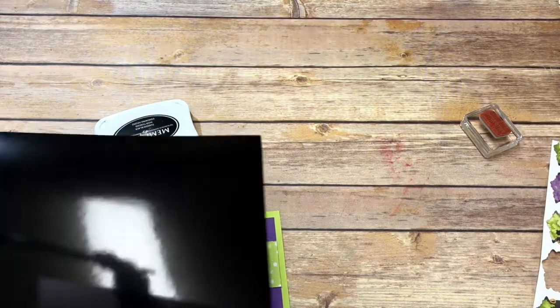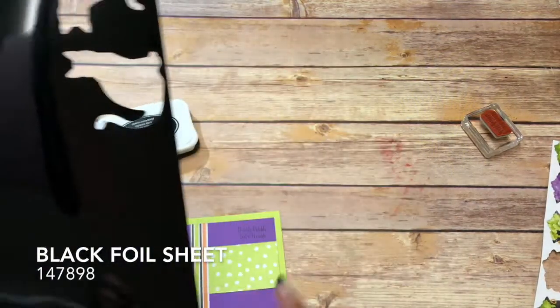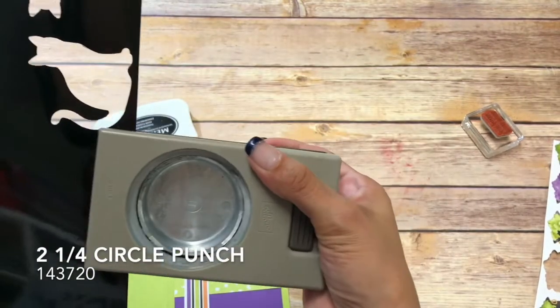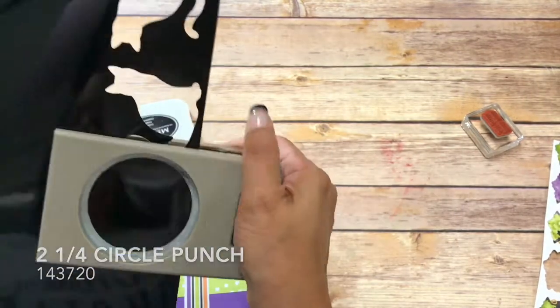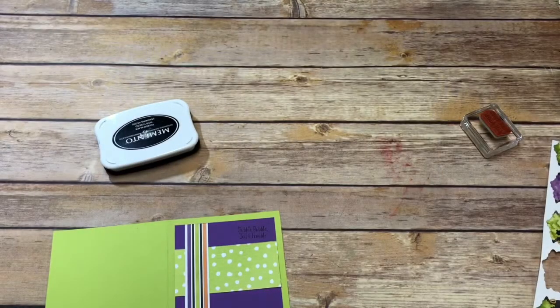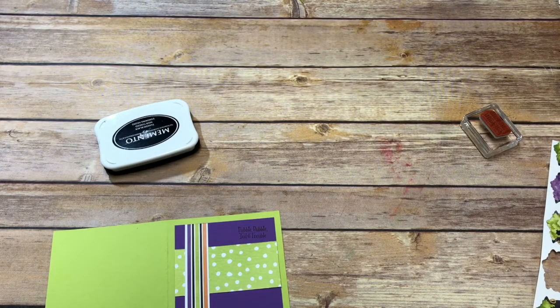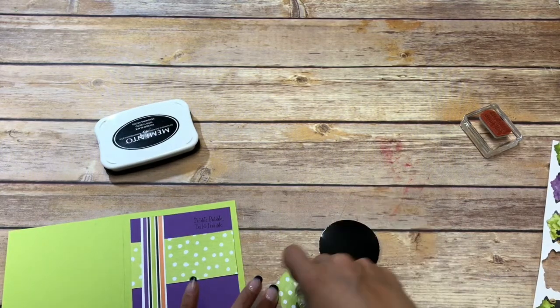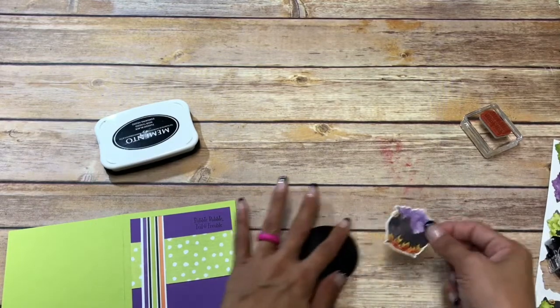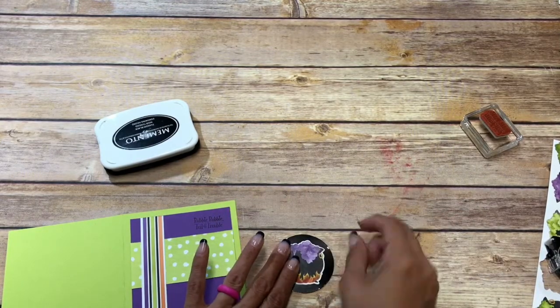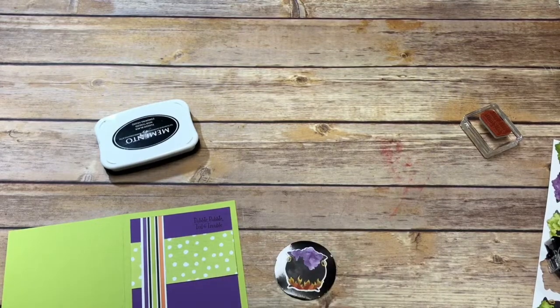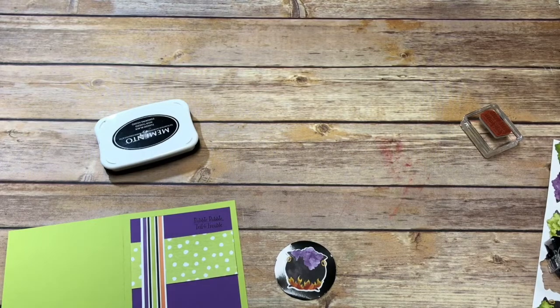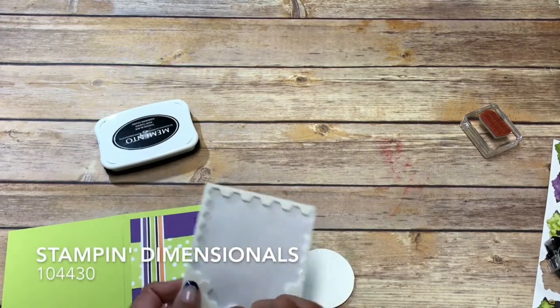And now I have my black foil sheet and I have the two and a fourth circle punch, just going to pop that out. Now I'm going to put this down on here and I'm going to pop that up with some Stampin' Dimensionals.